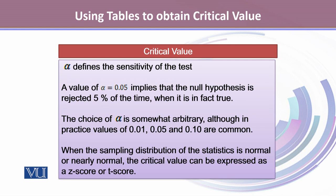Alpha is a very important value in statistical inference which defines the sensitivity of the test. A value of alpha equals 0.05 implies that the null hypothesis is rejected 5% of the time when it is in fact true.